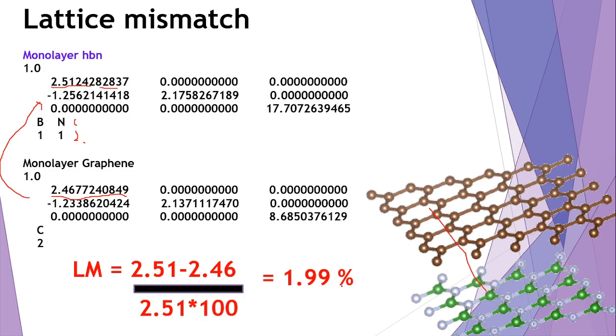This lattice mismatch is kind of okay. If you try to do computational studies on these heterostructures, you will find they are stable. The system will expand and you will be able to do the calculations.